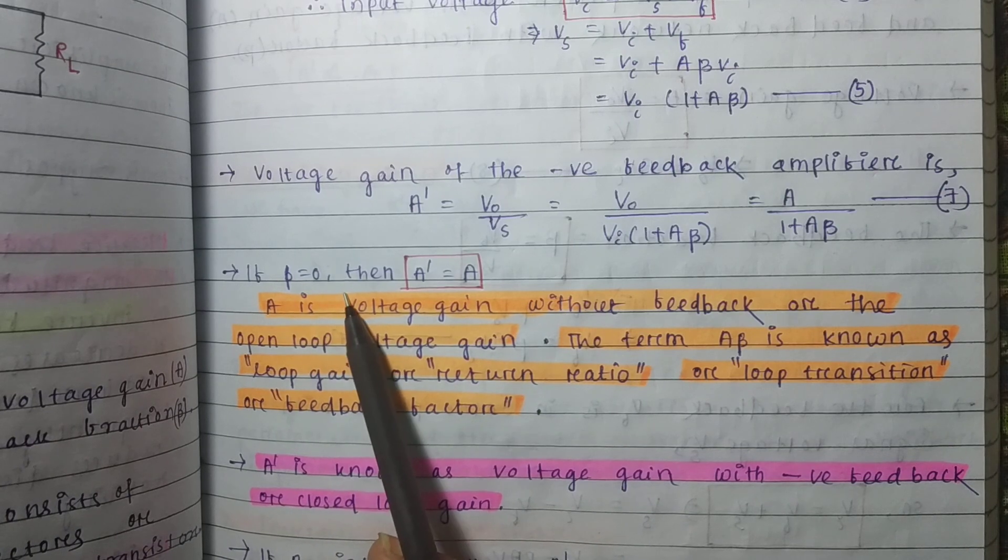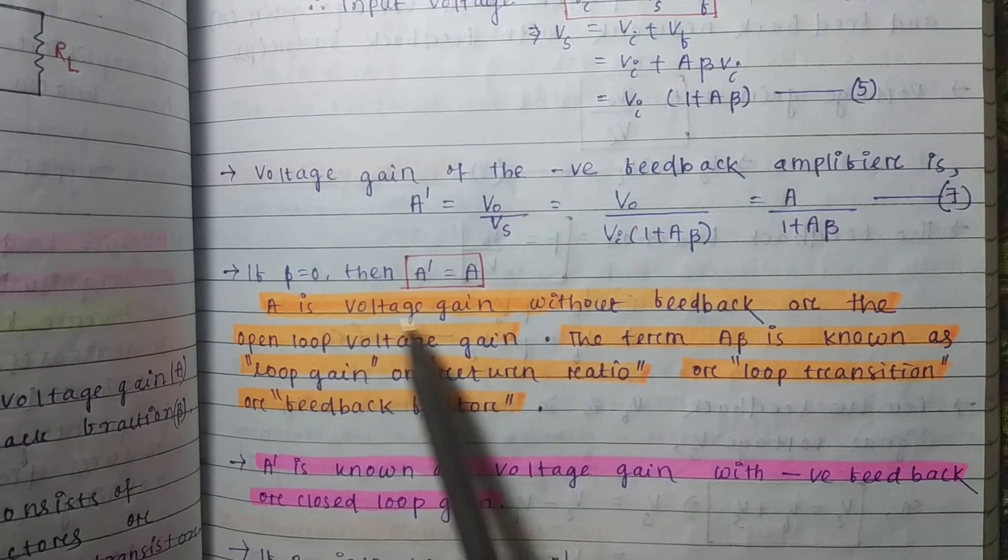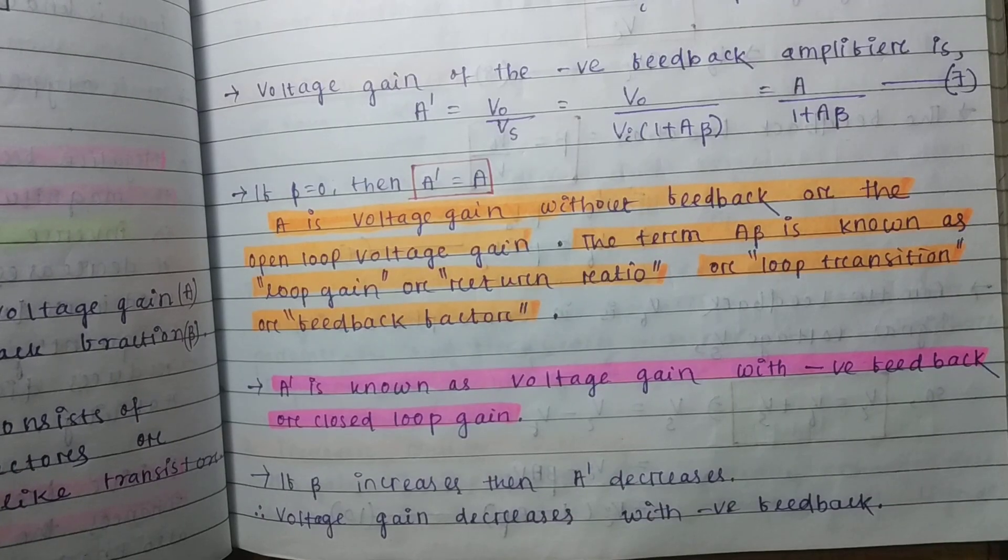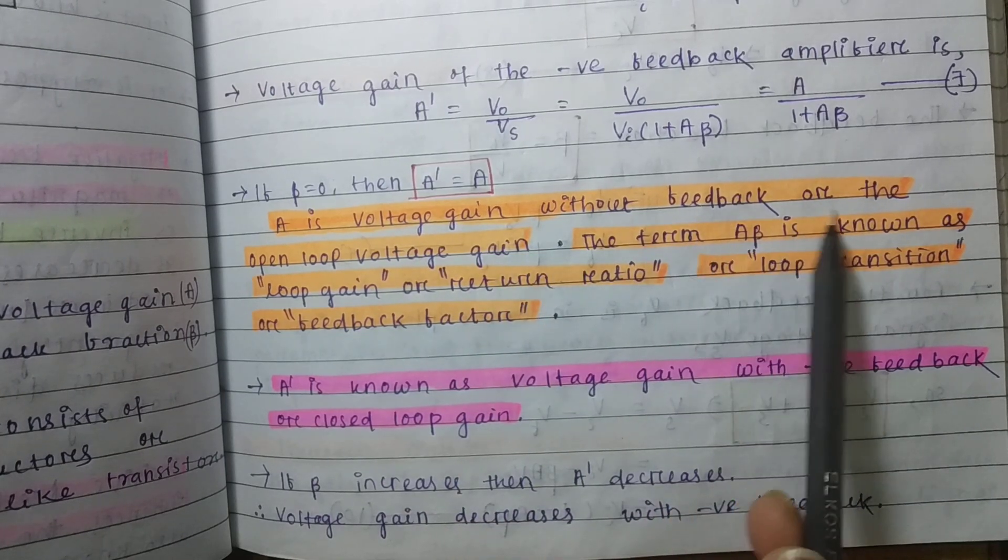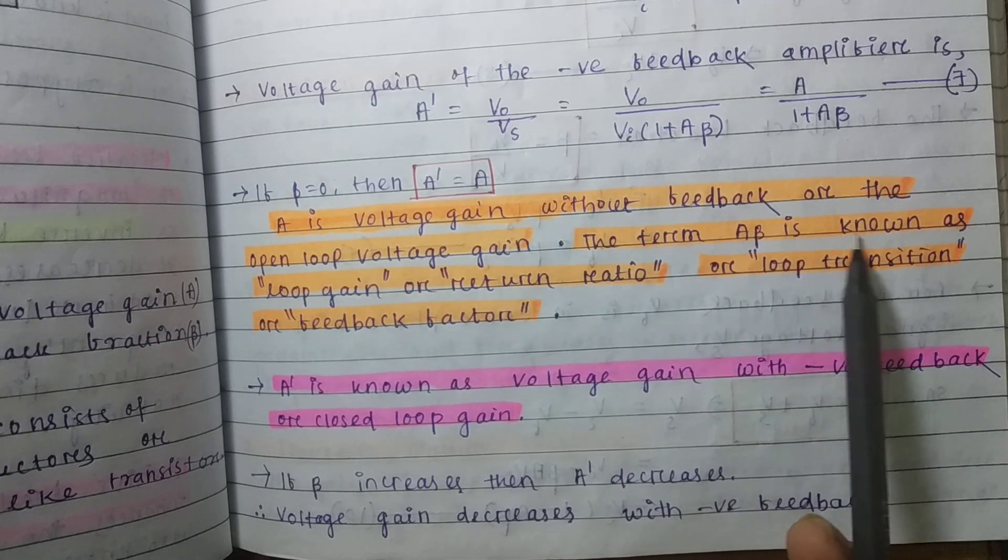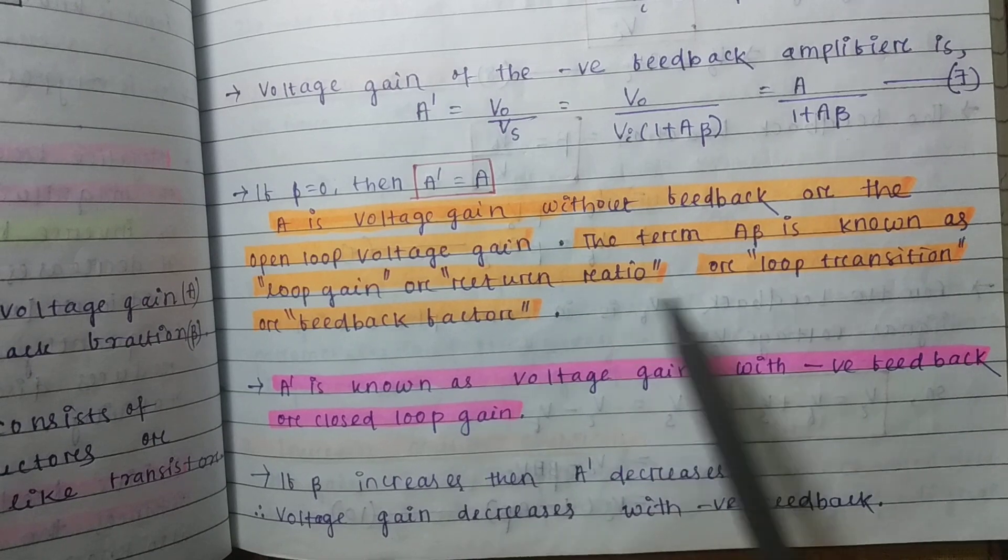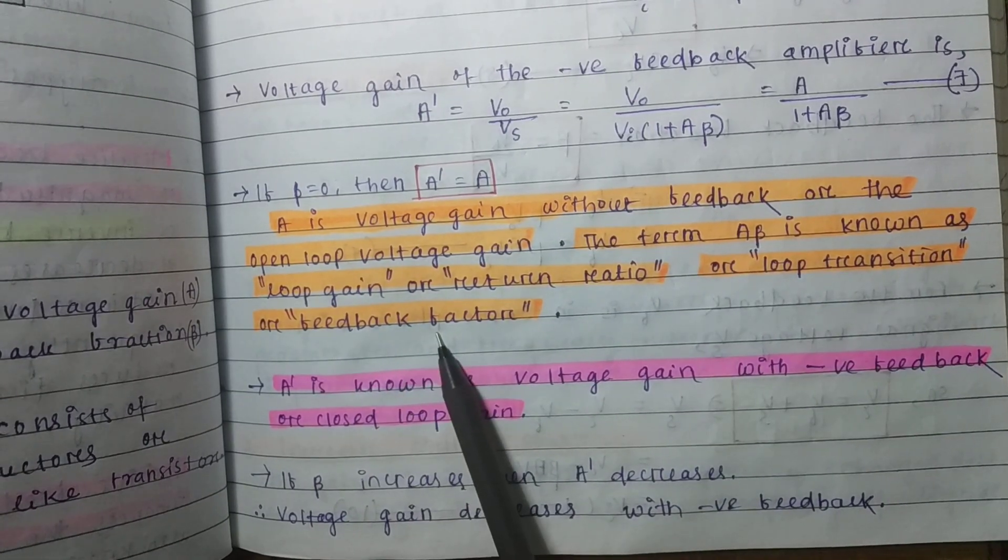If beta equals 0, then A prime is equal to A. A is voltage gain without feedback or the open loop voltage gain. The term A beta is known as loop gain, return ratio, loop transition, or feedback factor.